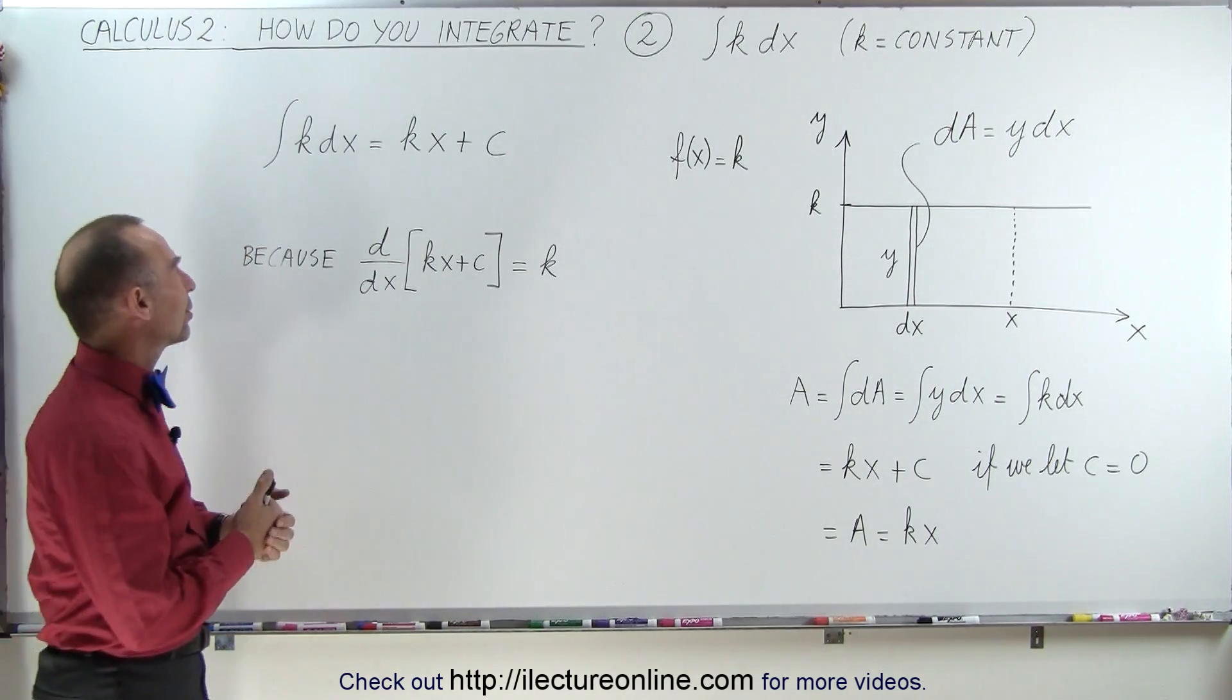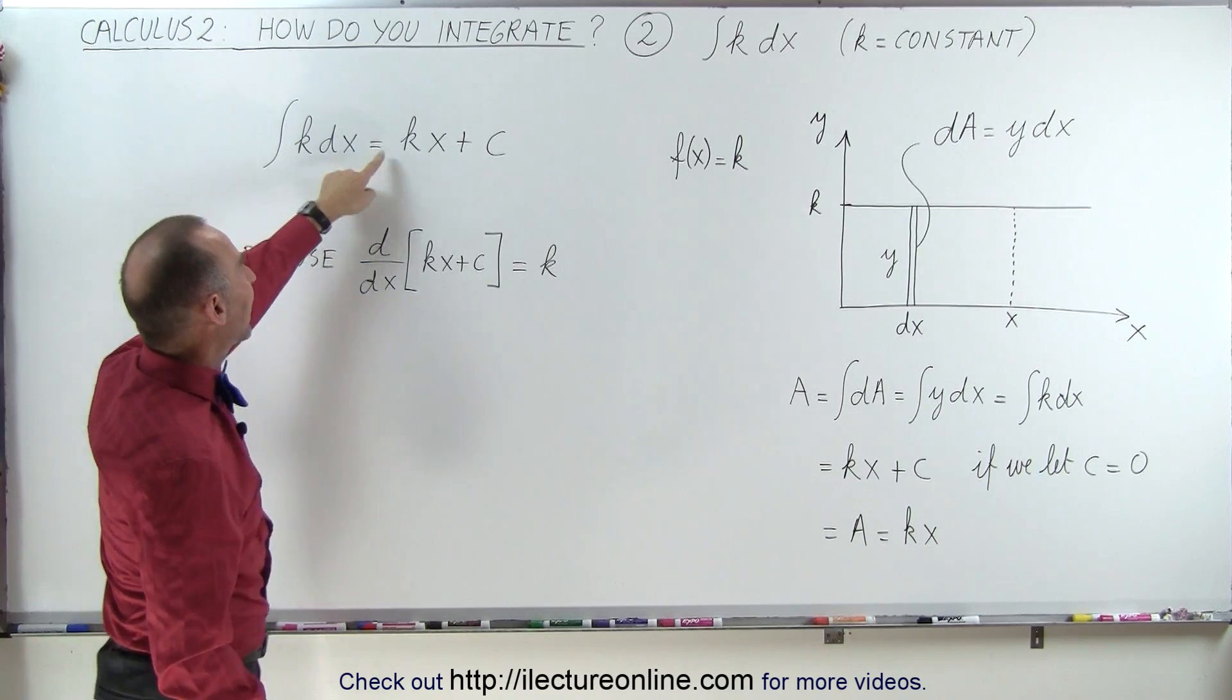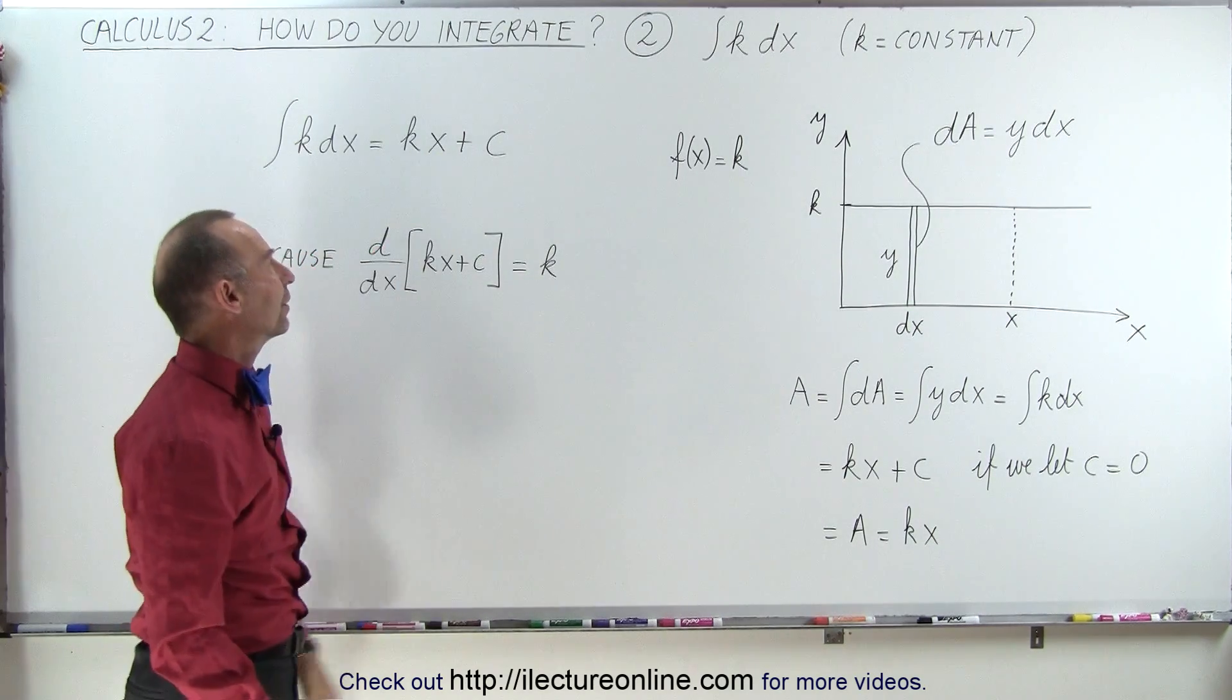That's, of course, the easiest integral you can imagine. The integral of a constant, k times dx, is equal to k times x plus the constant of integration.